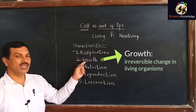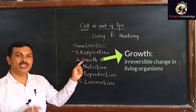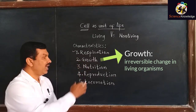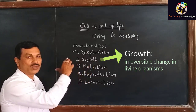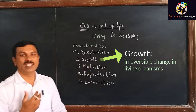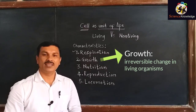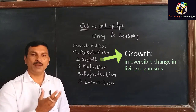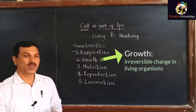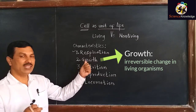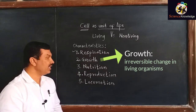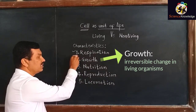On the other hand, in living organisms, there will be a change which is permanent — an irreversible change — and such a change is called as growth. For example, the green leaves turn yellow or red. The green fruits, after ripening, change their color. So whatever changes are there, these changes are irreversible, and that is why it is called growth.